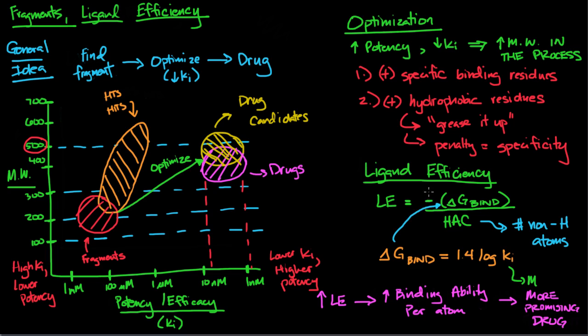What does ligand efficiency mean? The higher your ligand efficiency is, the greater the binding ability is per atom, and that means a more promising drug or more promising drug fragment. At the end of the day you want an ability to bind a specific target, and if your ligand efficiency is higher you're going to have a more promising drug. Those are the drugs that you want to use to try to optimize and end up with your final drug overall. So that about does it for fragments and ligand efficiency.